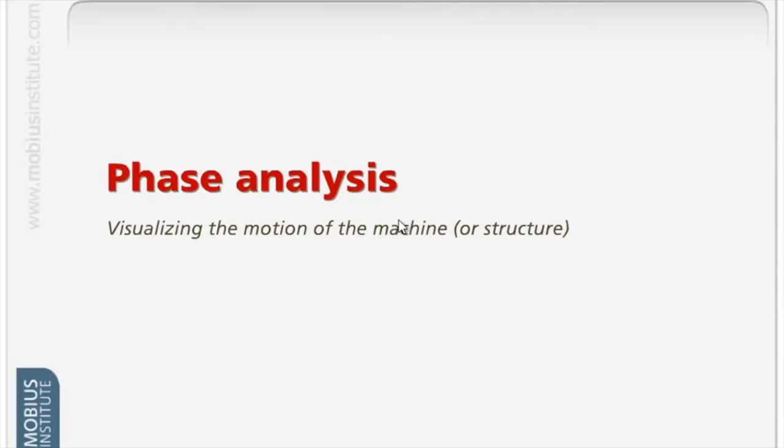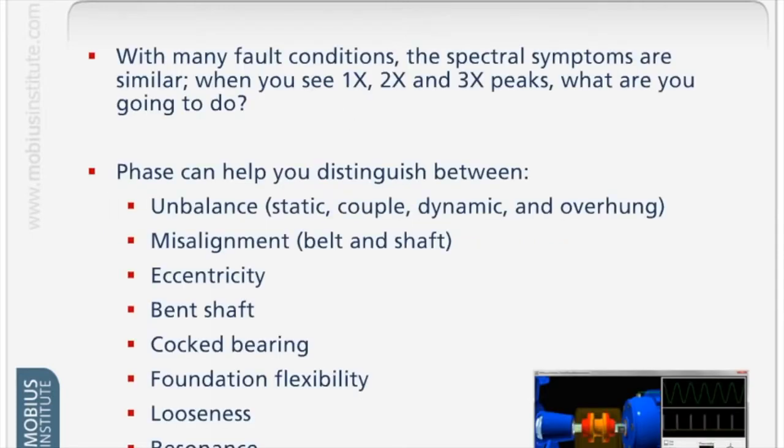That tells us a lot about the fault. So if we have a spectrum with a 1x peak and or 2x and or 3x, then there's a bunch of fault conditions that come to mind. It could be unbalance of varying types, misalignment, eccentricity, bent shaft, cocked bearing, etc. From the spectrum, it isn't always obvious which of these faults it is.